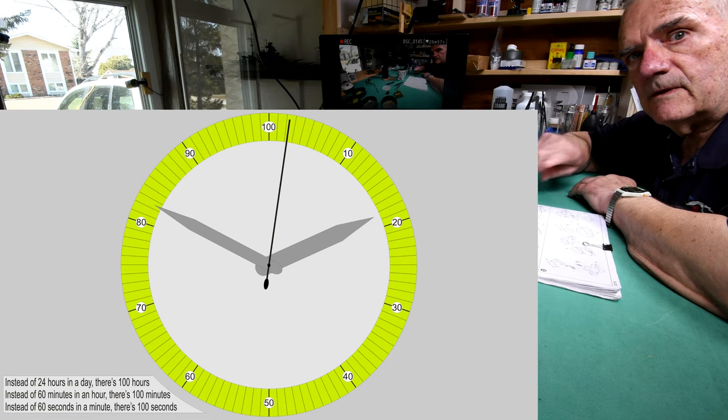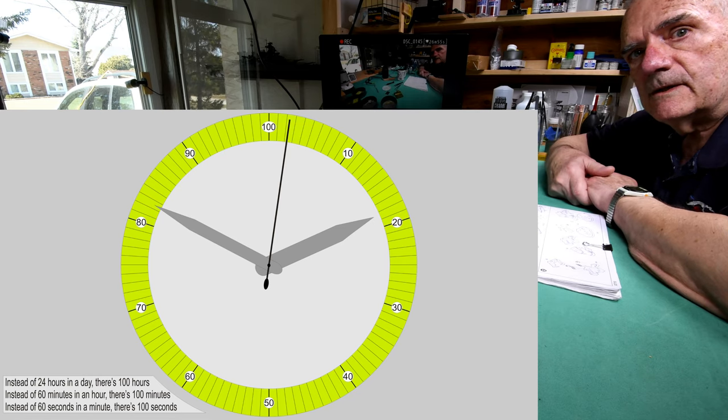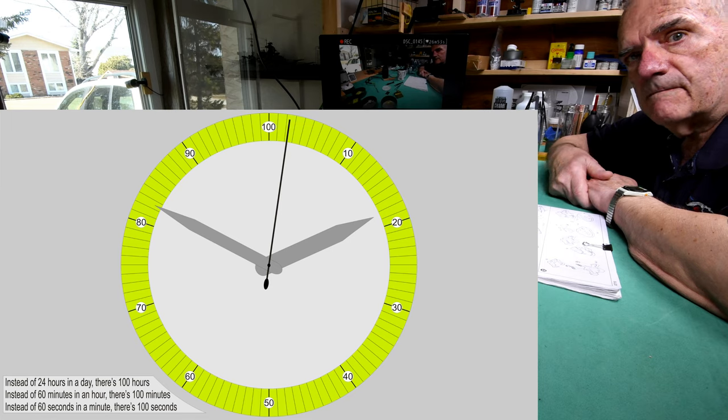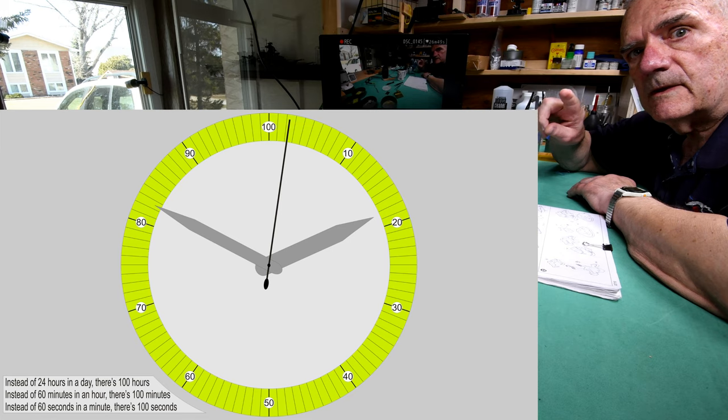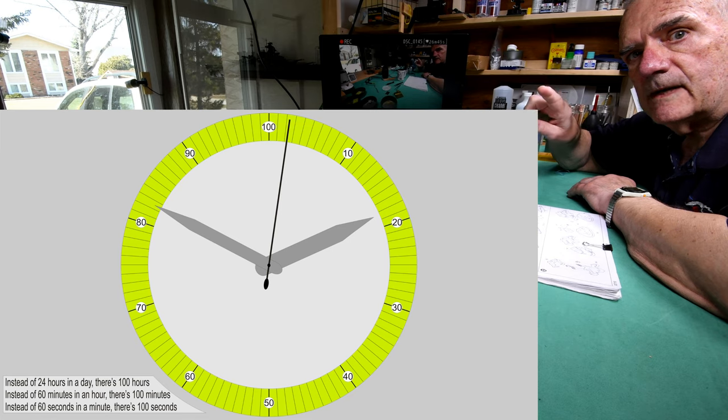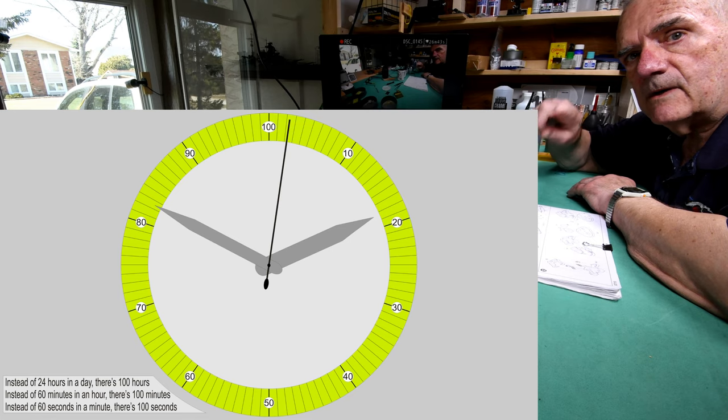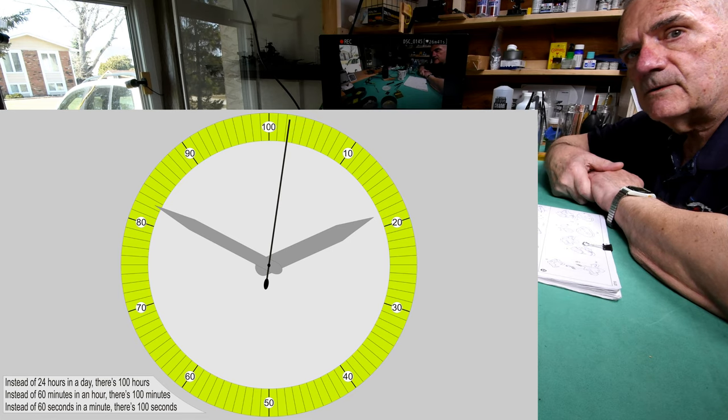Because each time it went around the dial, it would represent 100 seconds. And each time the second hand goes around once, a minute would sort of advance. And then the minute hand, when it goes around 100 times, the hour hand would advance to the next hour and so on and so on.